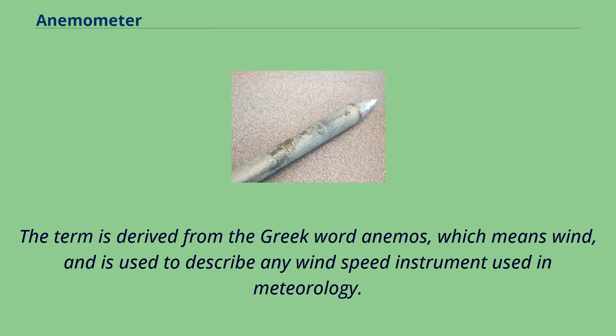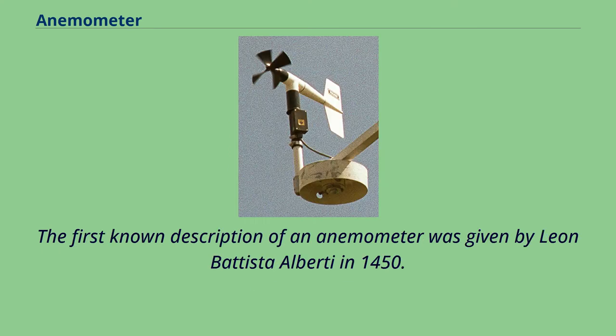The term is derived from the Greek word anemos, which means wind, and is used to describe any wind speed instrument used in meteorology. The first known description of an anemometer was given by Leon Battista Alberti in 1450.